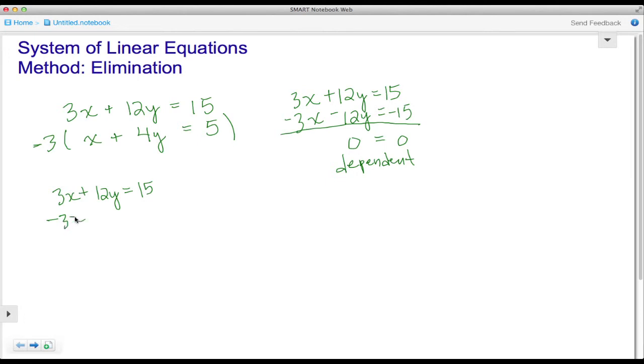Let's subtract 3x from both sides. In doing so, the x terms cancel out. I'm left with 12y = -3x + 15. Then I'm going to divide each term by 12.